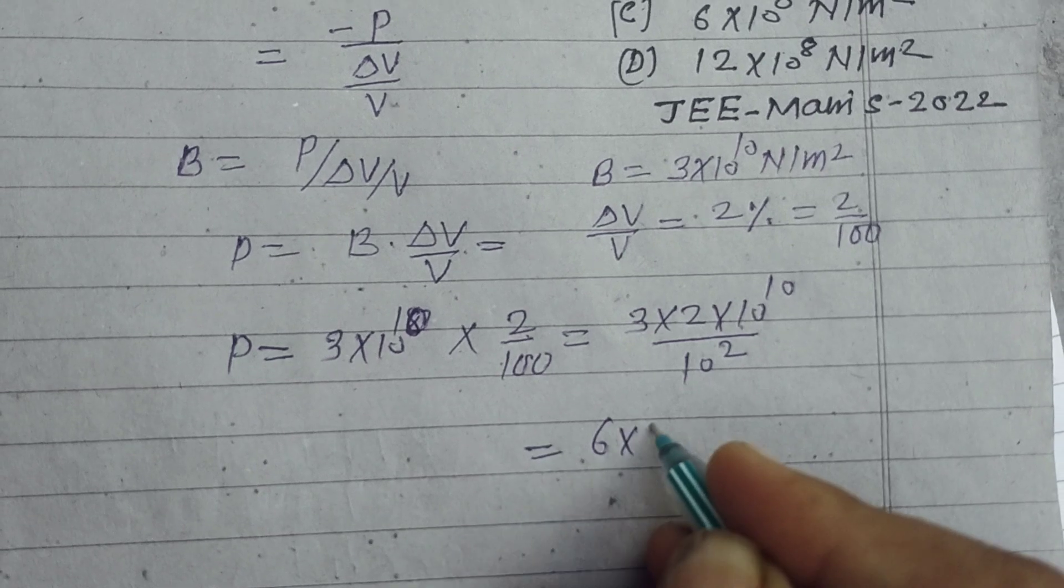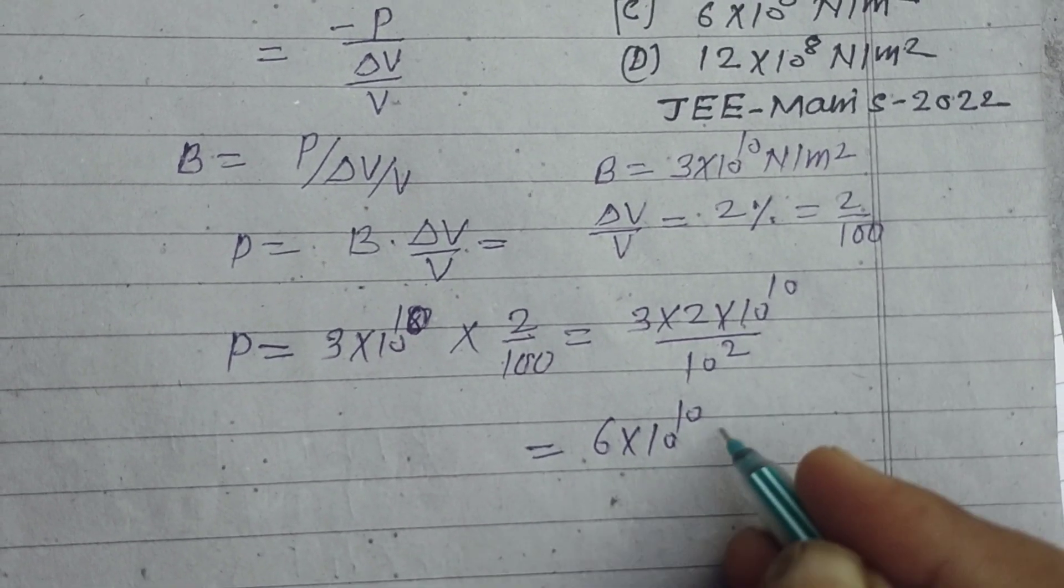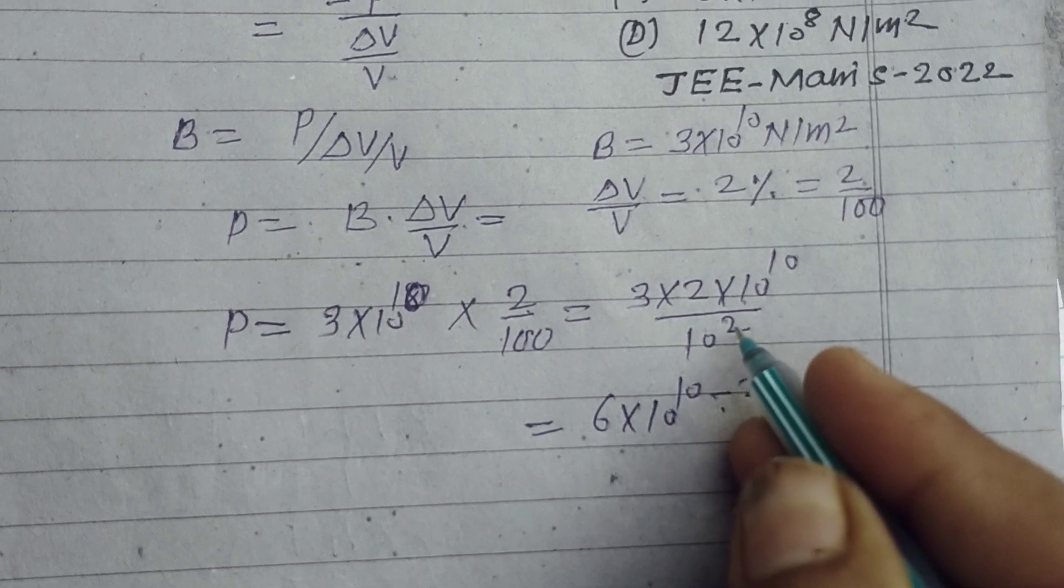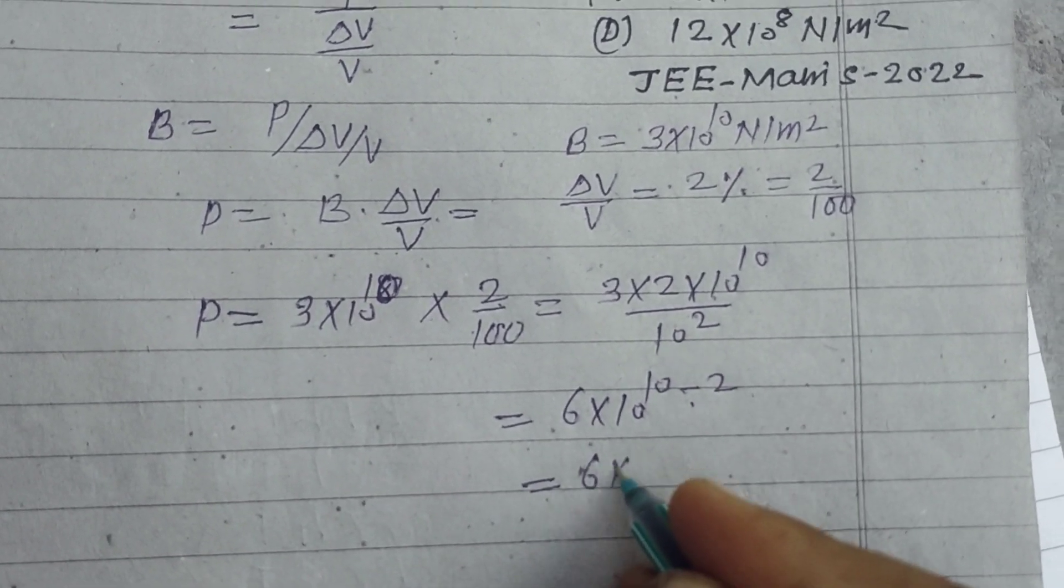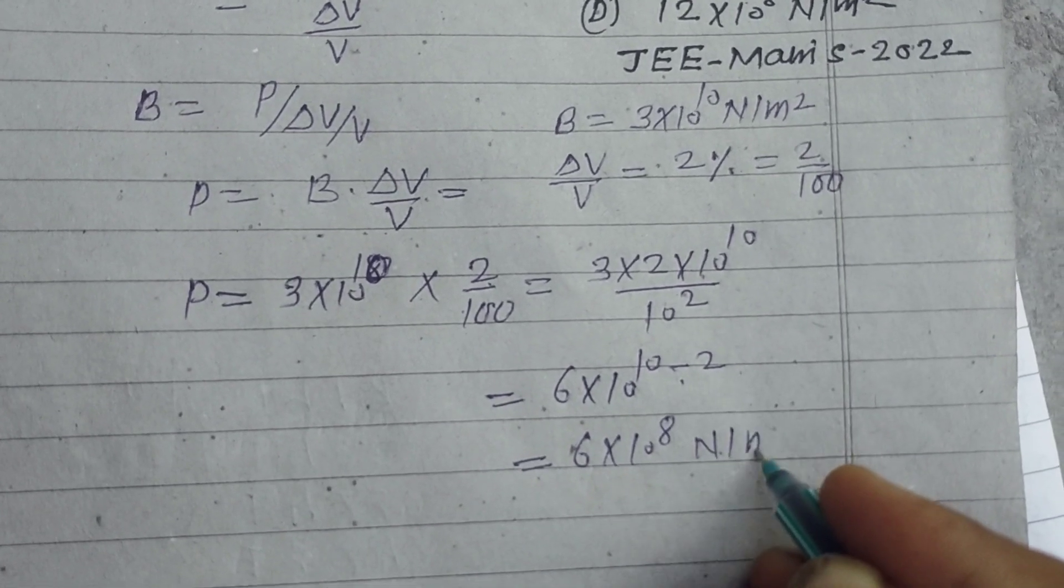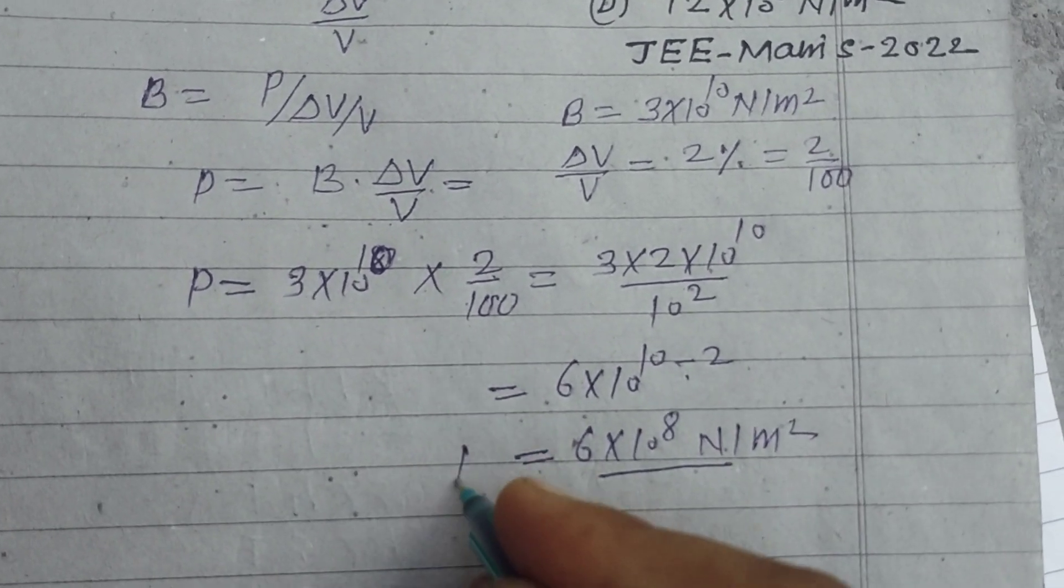So this is 6×10¹⁰⁻² = 6×10⁸ N/m² is the pressure.